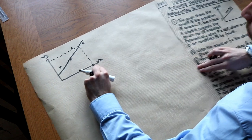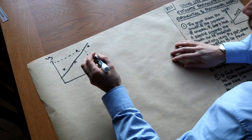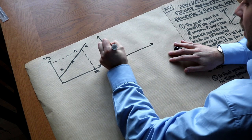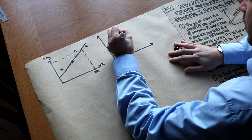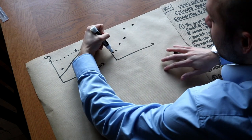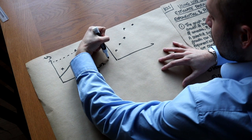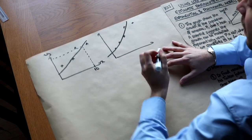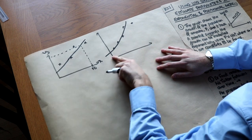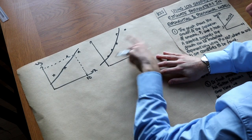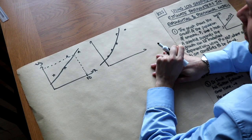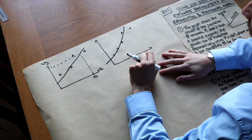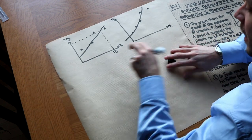Now suppose we actually wanted to do an exponential model of best fit. If we had some data points, we might want to produce an exponential model — a function where the variable is in the power. That's much harder to do than fitting a straight line of best fit, and the way we do it is this.